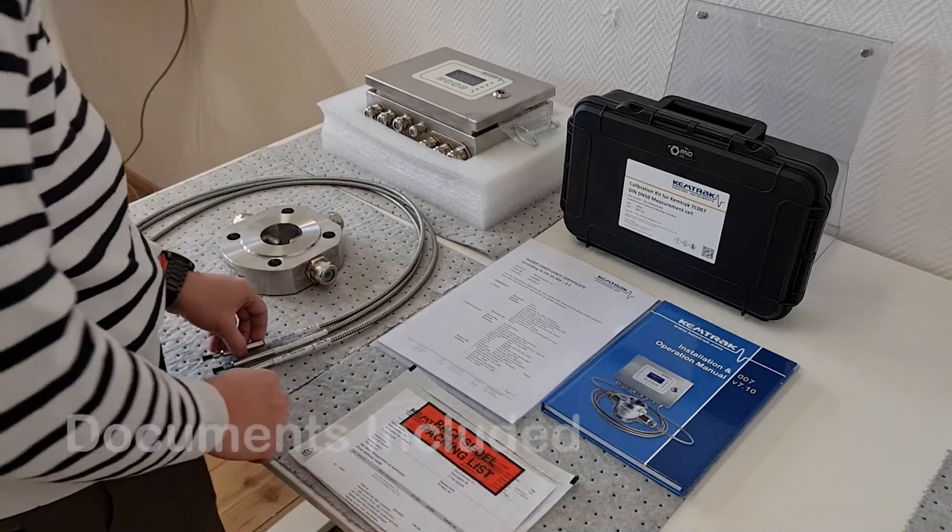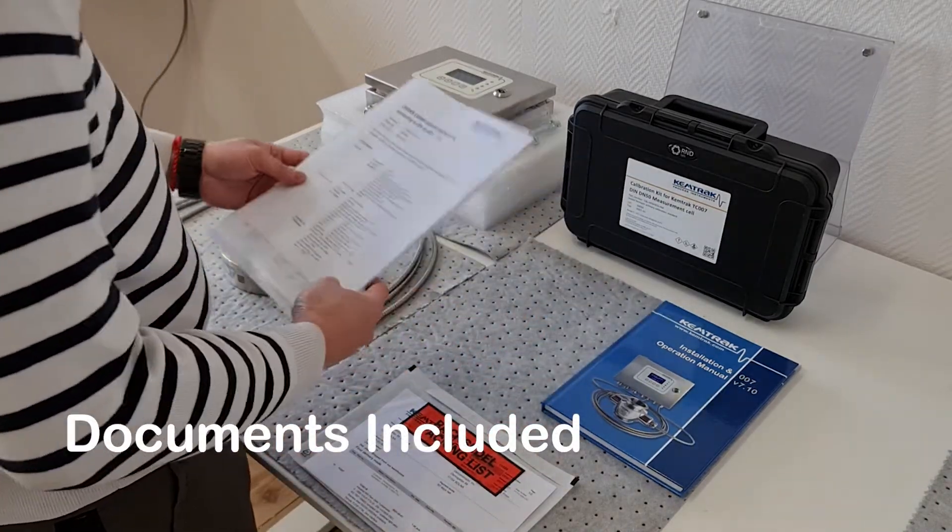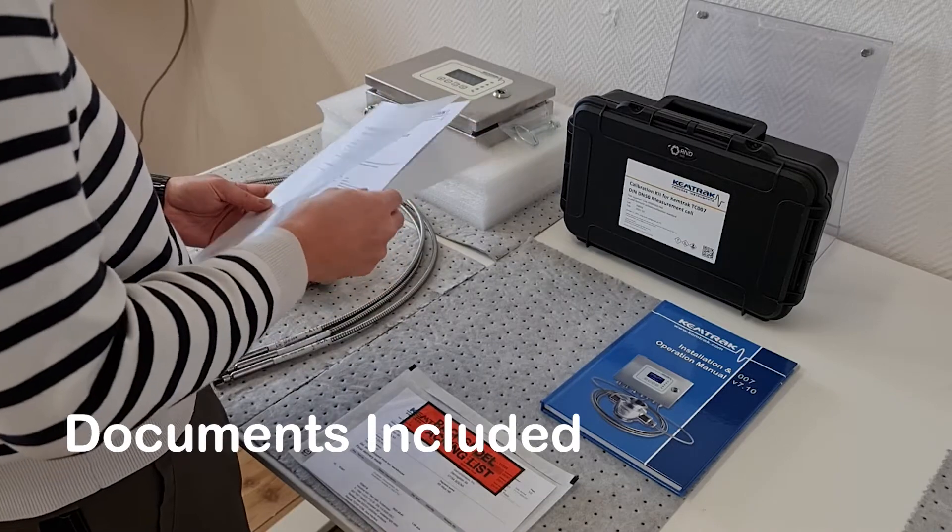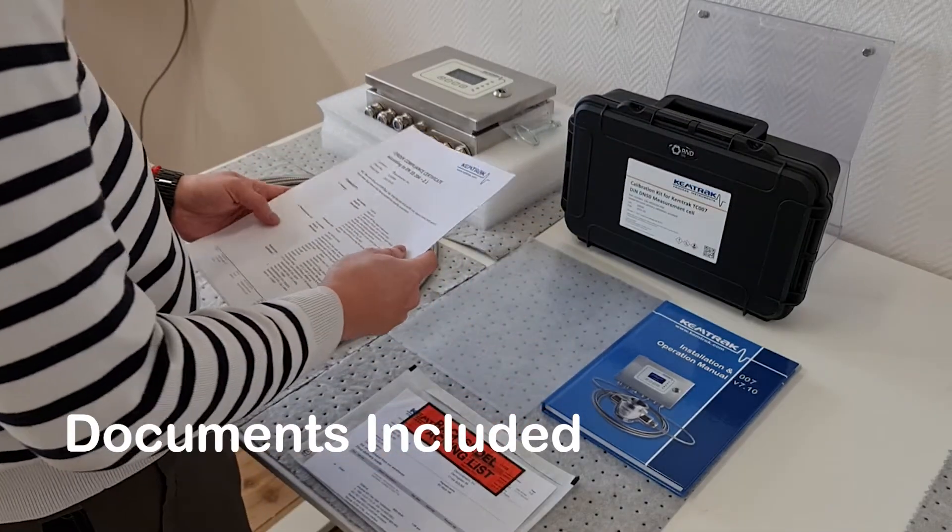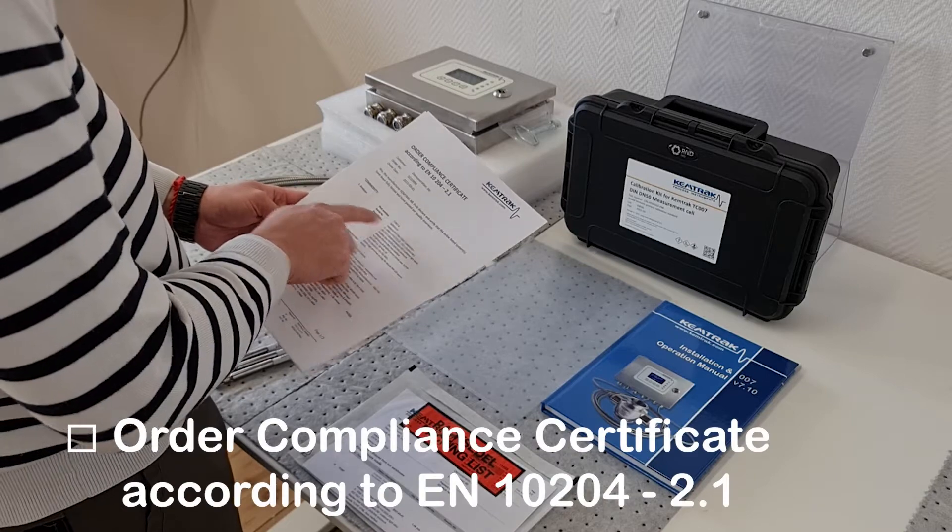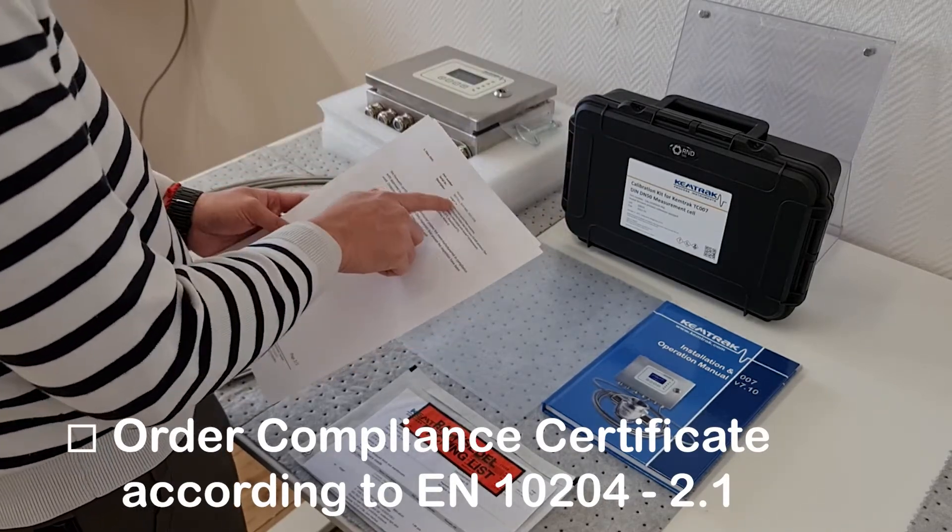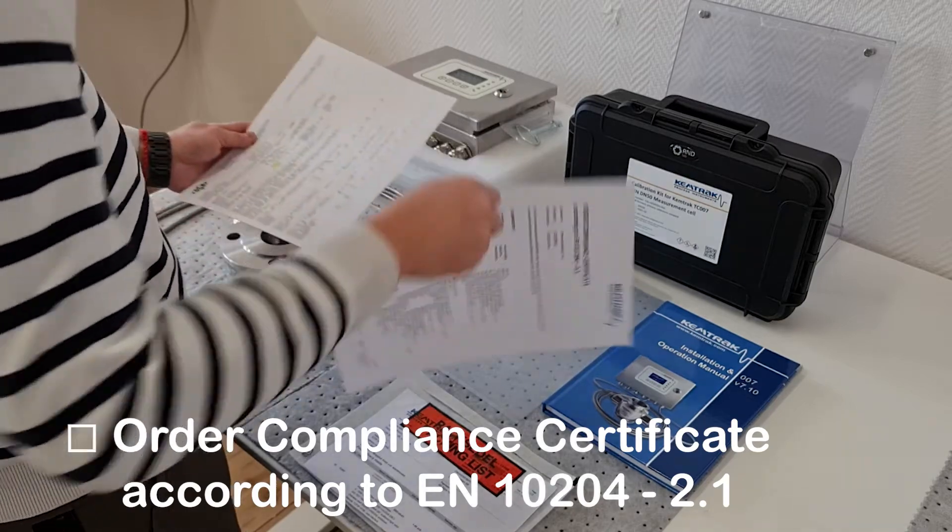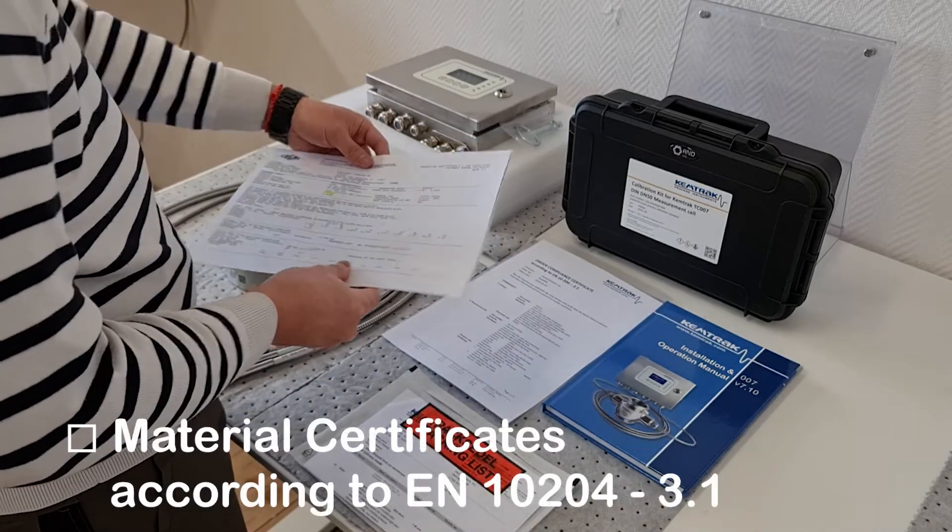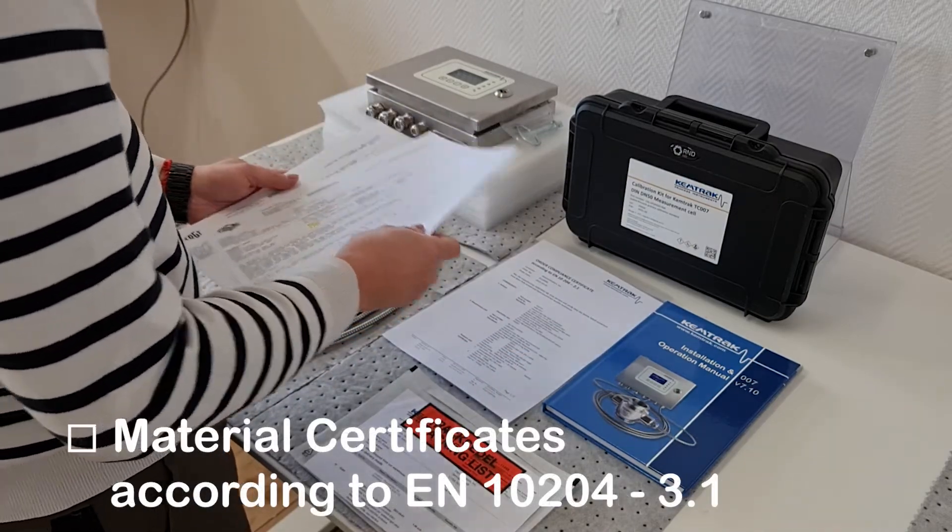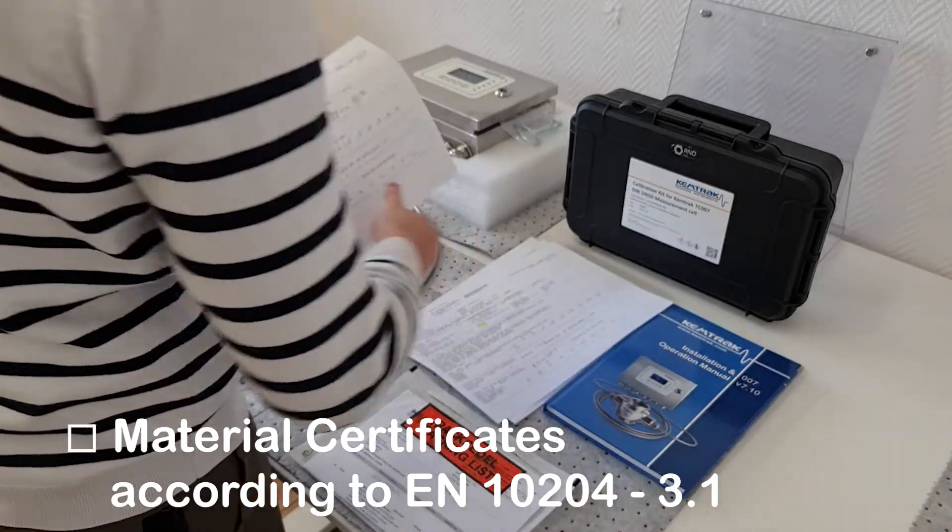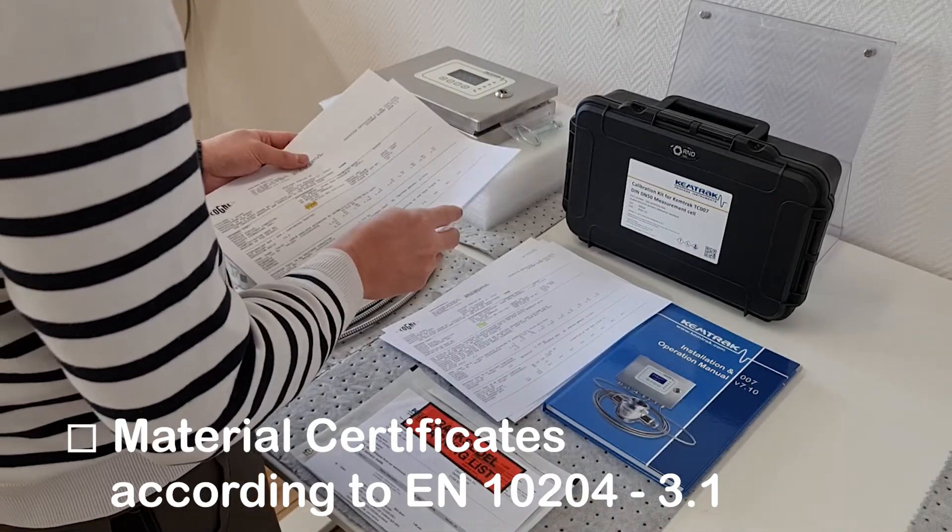The system delivered will also contain a package of important documents. The first document is a 2.1 order compliance certificate. This is a statement of compliance with the order by the manufacturer. The second documents are 3.1 material certificates that declares the metallic products are in compliance with the order requirements.